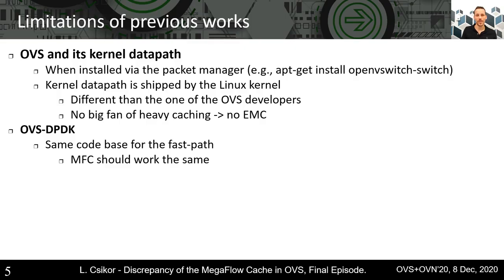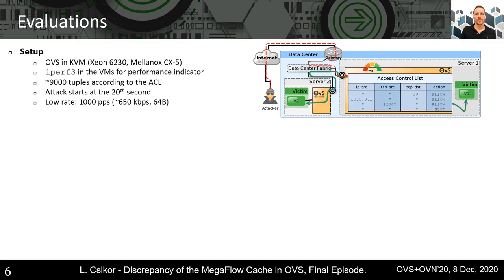So in this final episode, we released the last variable in our equations and scrutinized the different versions of OVS. For the evaluations, we use a simplified KVM environment with two servers, each running OVS as its hypervisor switch. Within and between the VMs, we use a simple IPv4 session to indicate the performance of OVS. The attacker resides outside of the system and sends malicious traffic towards the ACL installed in server 1. According to the ACL, around 9,000 tuples can be generated in the MFC, and the attack starts at 20 seconds with a 1,000 pps rate. OVS is restricted to use one core only.